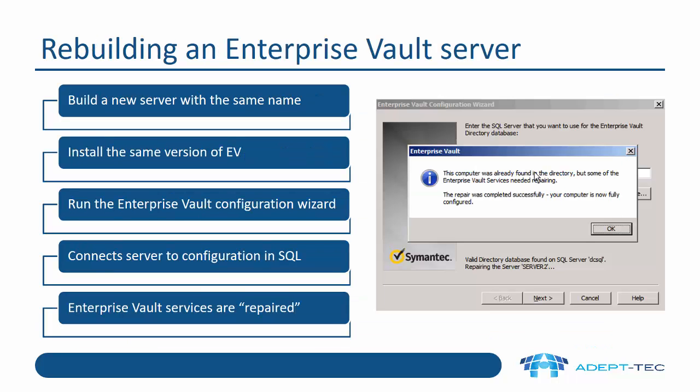First of all, rebuilding an Enterprise Vault server. This is actually very straightforward these days because generally all the data is not stored on the Enterprise Vault server, but on maybe a SAN or some other storage area. In the old days, everything was on the same EV server including SQL, and then it was very challenging to rebuild the whole EV server. So if all the storage is elsewhere, then all we need to do is build a new server with the same name, install the same version of EV — that's important. When you run the Enterprise Vault configuration wizard, it will detect that the server already exists within the directory database of the same name, and it will connect that server to that configuration, and the Enterprise Vault services will be repaired — really they're added to your server. You then have a working server using the previous configuration.